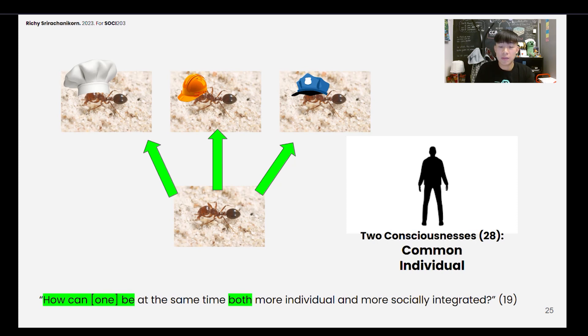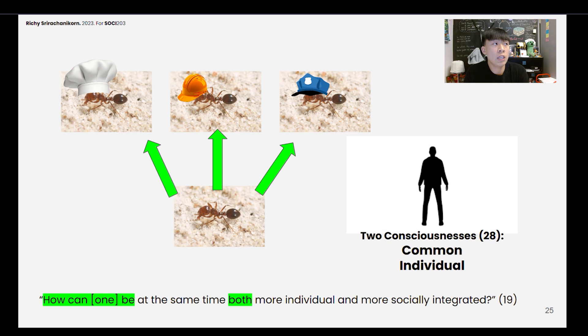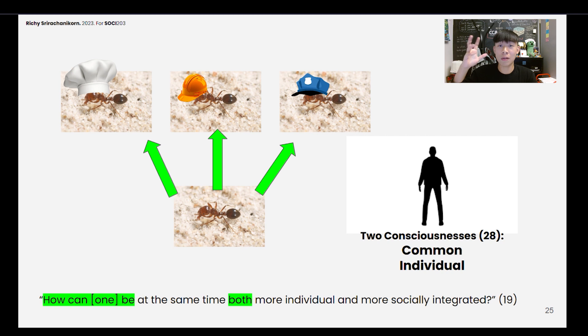Durkheim was interested in why that was. He asked: how can a person be at the same time both more individual and more socially integrated at once? It doesn't make sense. If you keep doing your role and pursuing your responsibilities, how do you tend to your own needs? Or vice versa, if you tend to your own needs, how does that assure that you go out and contribute to the greater good? And so he divided within the individual two kinds of consciousness — two kinds of being within the same person.